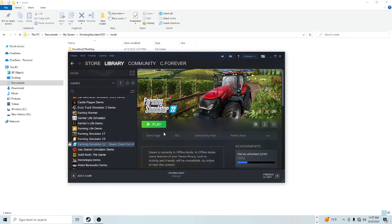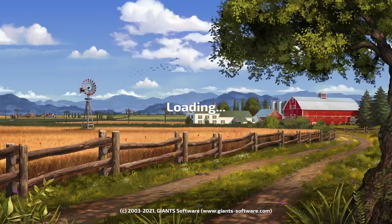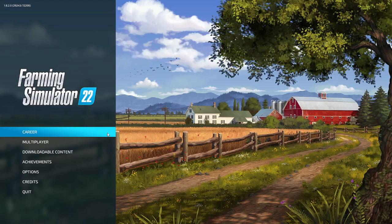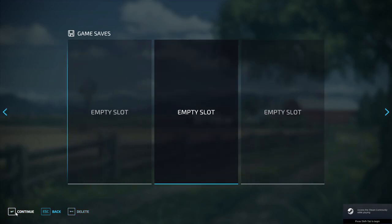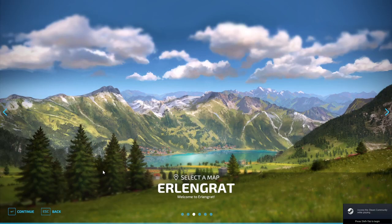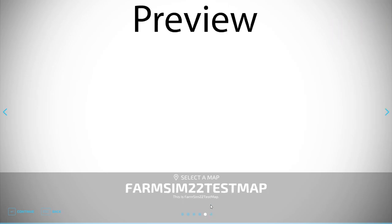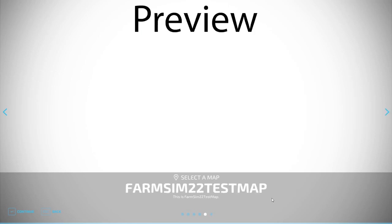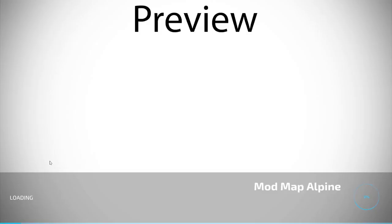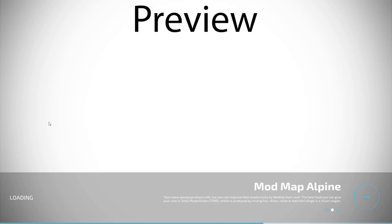We're going to go in game and show you that it'll work. Click on it — it'll be the Alpine one because I didn't rename it, so it'll still show the original Alpine name. It says 'Mod Map Alpine' — that's the one. The other one I did rename but not this one since we just made it. You can rename it; I have videos on that. Select the Alpine one, click Continue, click Start, and it will load up and you'll see the Alpine map with all textures present.